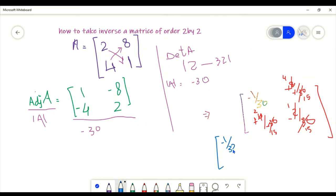The matrix is [4 over 15, 2 over 15; 2 over 15, minus 1 over 15]. That's our final answer.